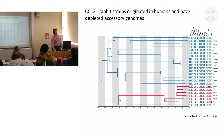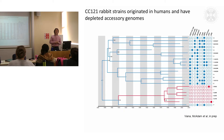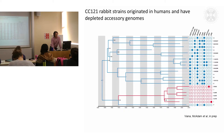Looking at the human strains, we can see a variety of different mobile genetic elements, many of them encoding for virulence determinants — factors which contribute to pathogenesis and causing disease in human hosts. But when we look at the accessory genome for the rabbit strains, we don't really see any.